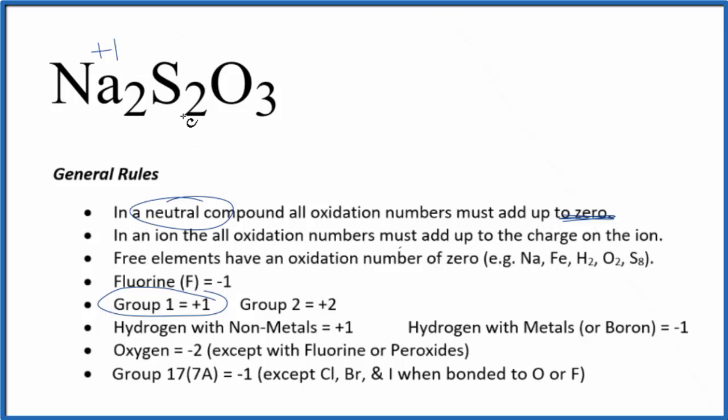Sulfur can have different oxidation numbers depending on what it's bonded to, so we don't know what that is. Let's call that X. Oxygen is going to be minus two with just a few exceptions.